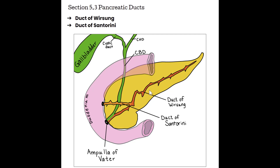So the duct of Wirsung is the big one — it's the main pancreatic duct. The accessory duct, also known as the duct of Santorini, branches off of the main duct and has its own entrance into the duodenum about two centimeters superior to where the ampulla of Vater enters. So the duct of Wirsung is the main pancreatic duct, and the duct of Santorini is the smaller accessory duct.